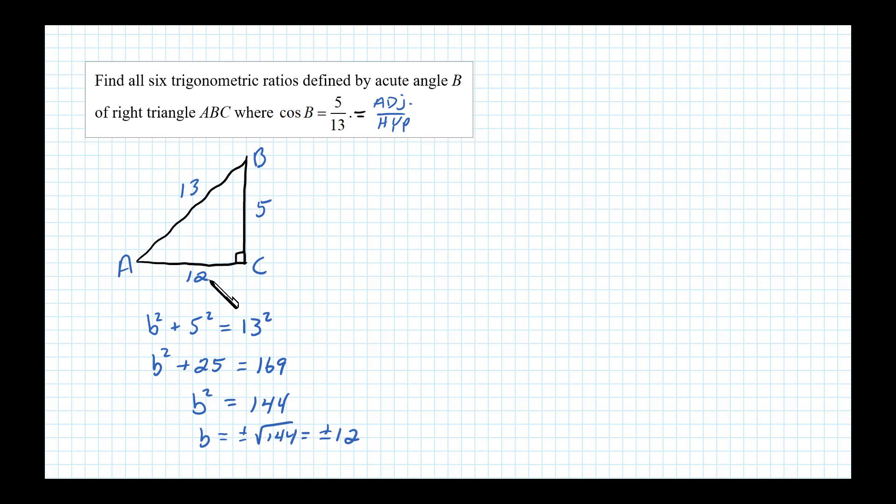So this is the length of 12 units right here. Once we have all three sides of the right triangle, we can now write out our six trigonometric ratios. We have to be a little careful - it wanted the angle B.